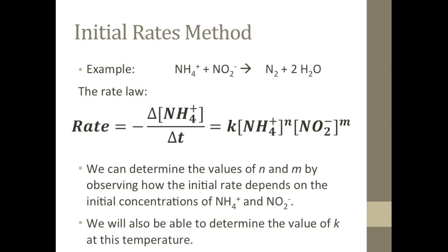Here is our example: the reaction of ammonium and nitrite to form nitrogen and water. To get us started, the rate law can be written as the rate of disappearance of ammonium ion set equal to K times the molar concentration of ammonium to the N power times the molar concentration of nitrite to the M power.